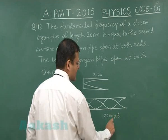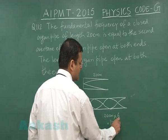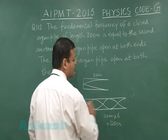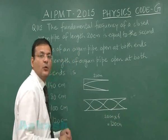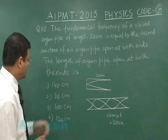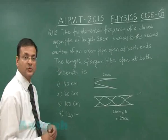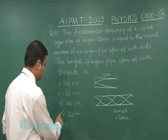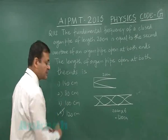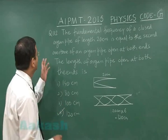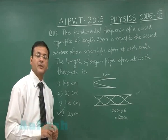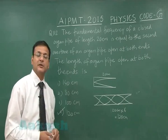The total length is 120 centimeters, which is simply 20 centimeters multiplied by six. That will be the length of the open pipe. So the answer is option number four for question 112.